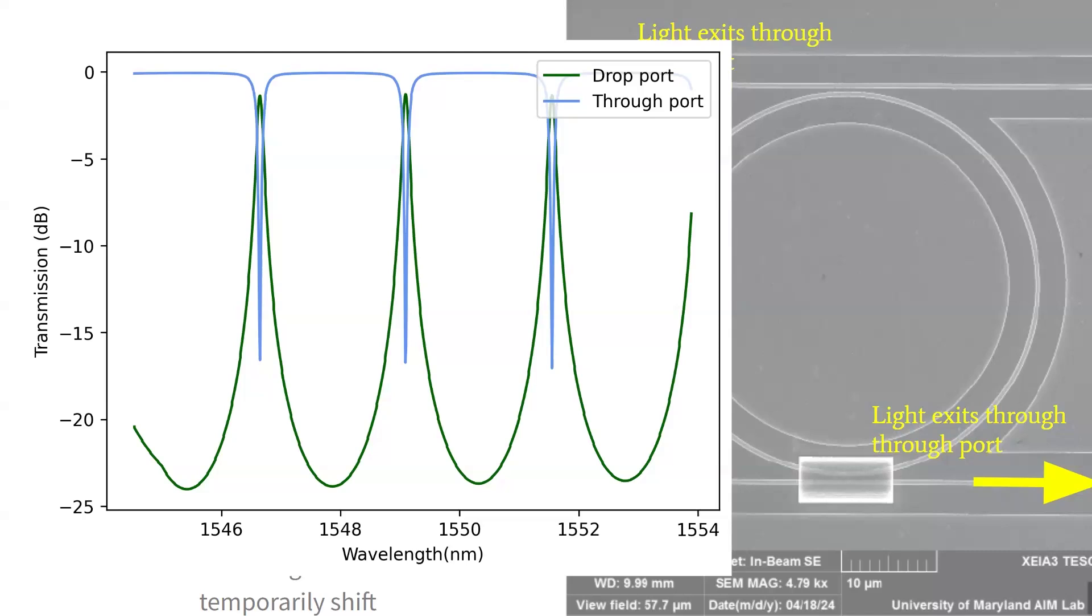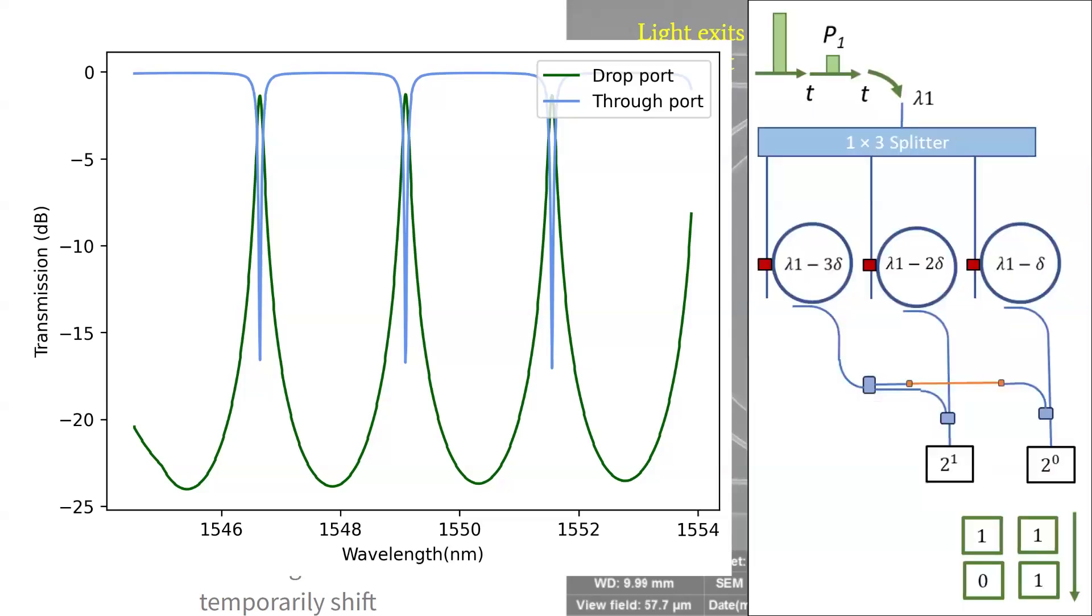So why would we want to do this? Well, in the long term, we can use multiple of these systems in analog to digital conversion, where if we have an analog signal coming in here, these ring resonators will give an output at different levels of offset.